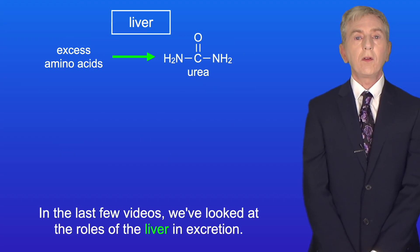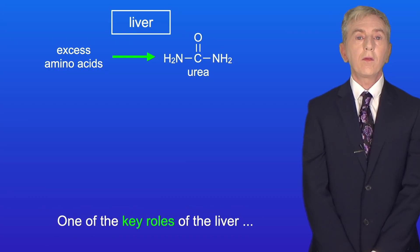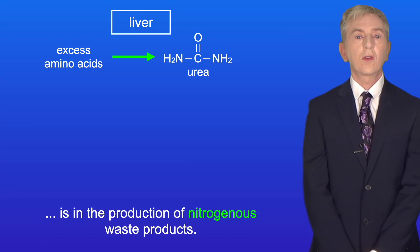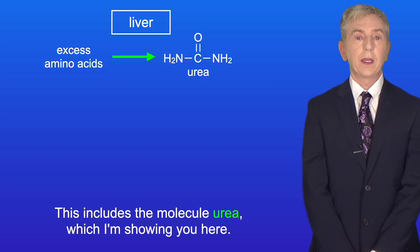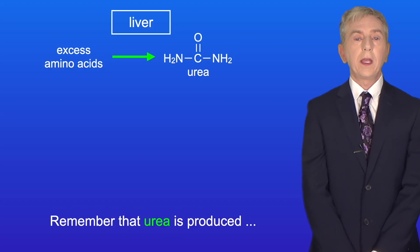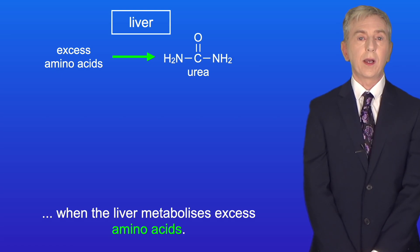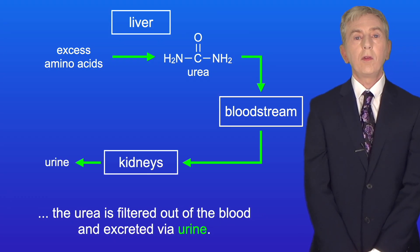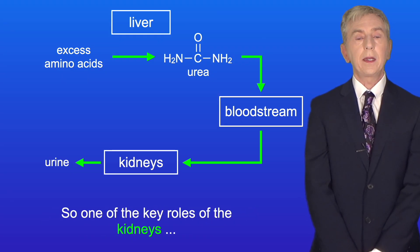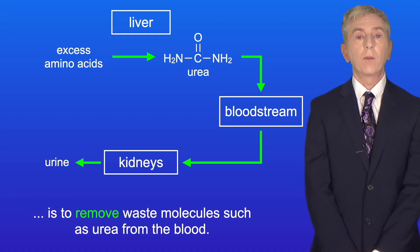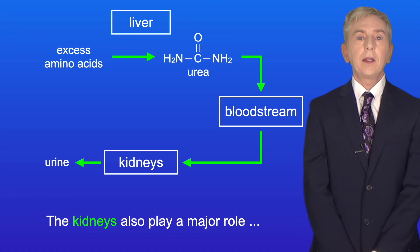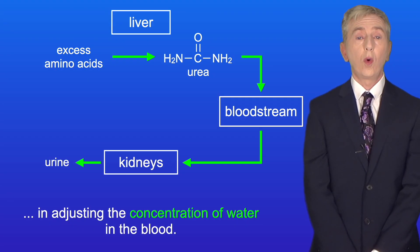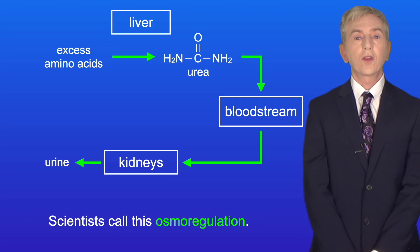In the last few videos we've looked at the roles of the liver in excretion. One of the key roles of the liver is in the production of nitrogenous waste products, and this includes the molecule urea. Remember that urea is produced when the liver metabolizes excess amino acids. The urea produced by the liver passes into the bloodstream, and when the blood passes through the kidneys, the urea is filtered out of the blood and excreted via urine. The kidneys also play a major role in adjusting the concentration of water in the blood — scientists call this osmoregulation.